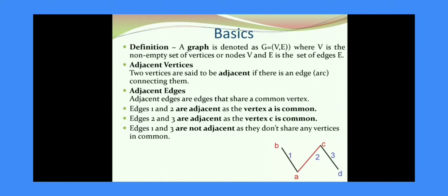The next definition is adjacent edges. Adjacent edges are the edges that share a common vertex. What about the edges 1 and 2? Are they adjacent? Yes, because they both are incident at a common vertex A. If we consider the edges 1 and 3, then they are not incident at any common vertex, so they are non-adjacent.